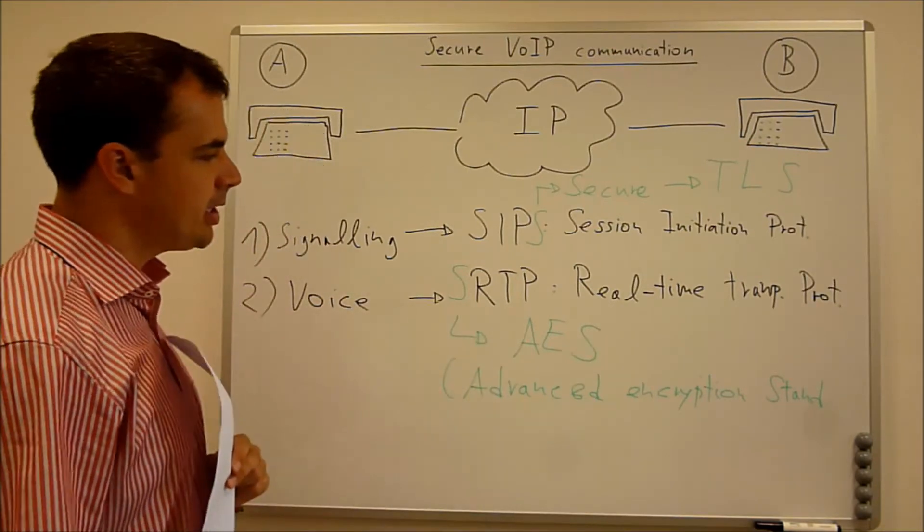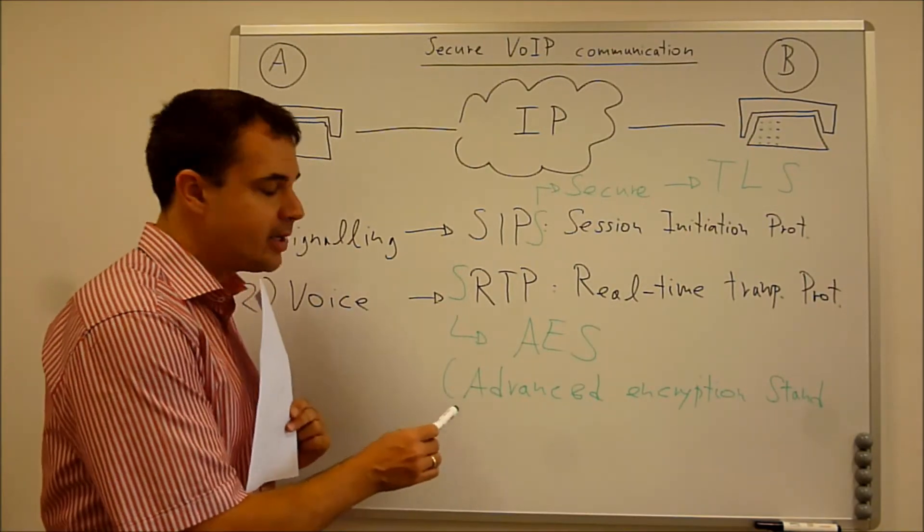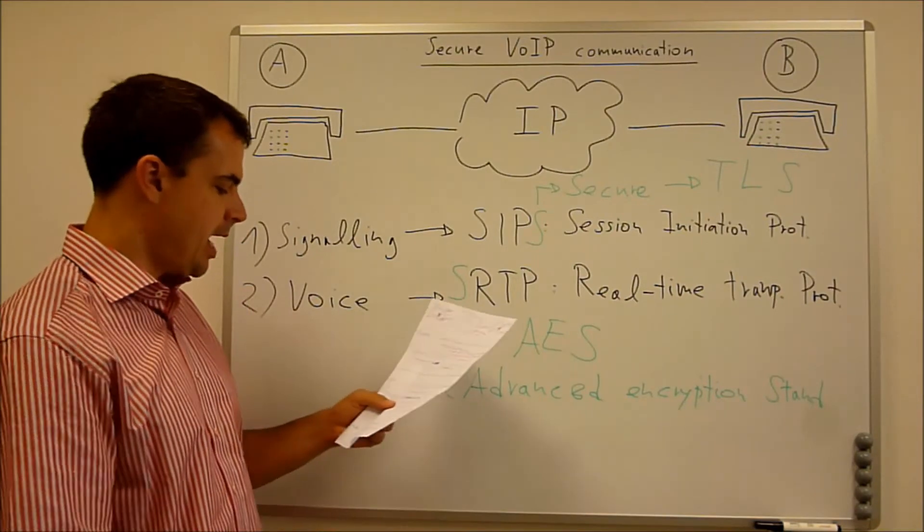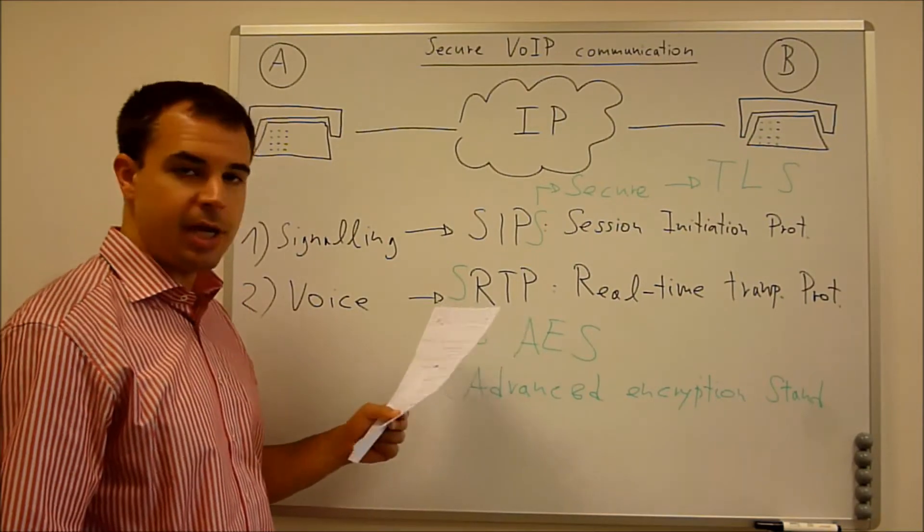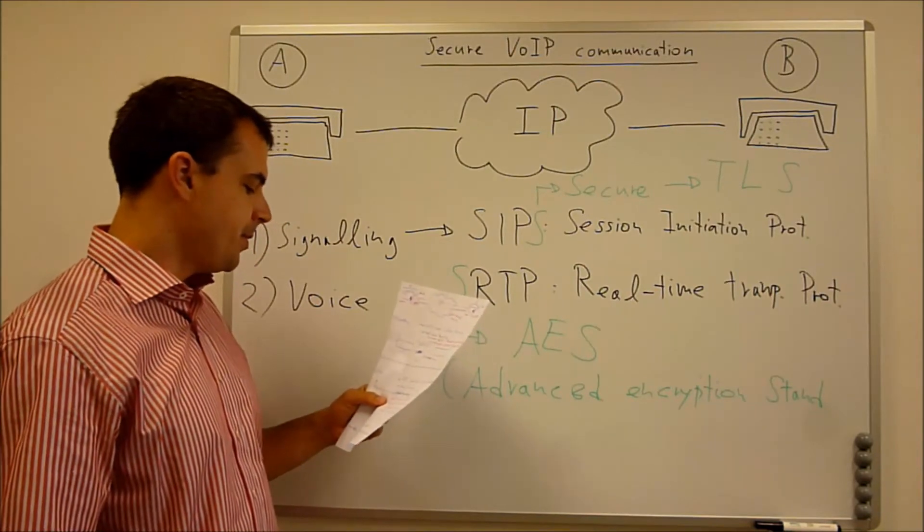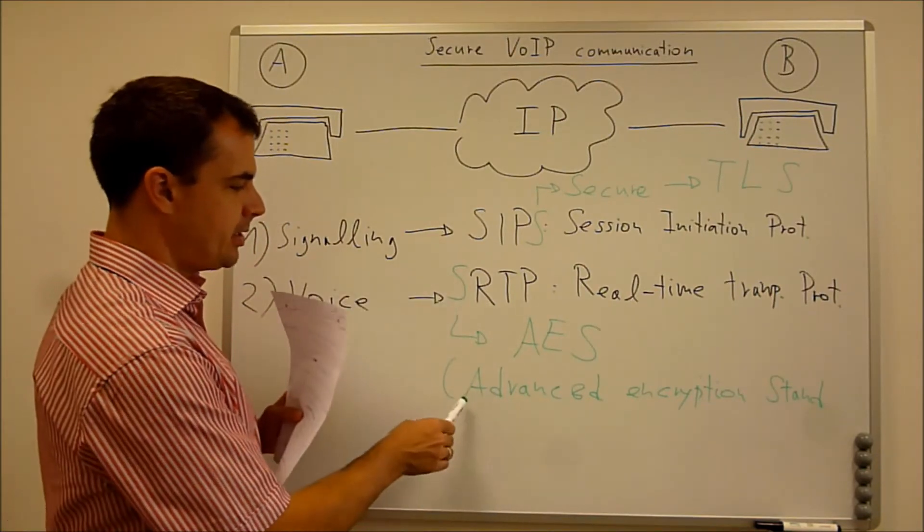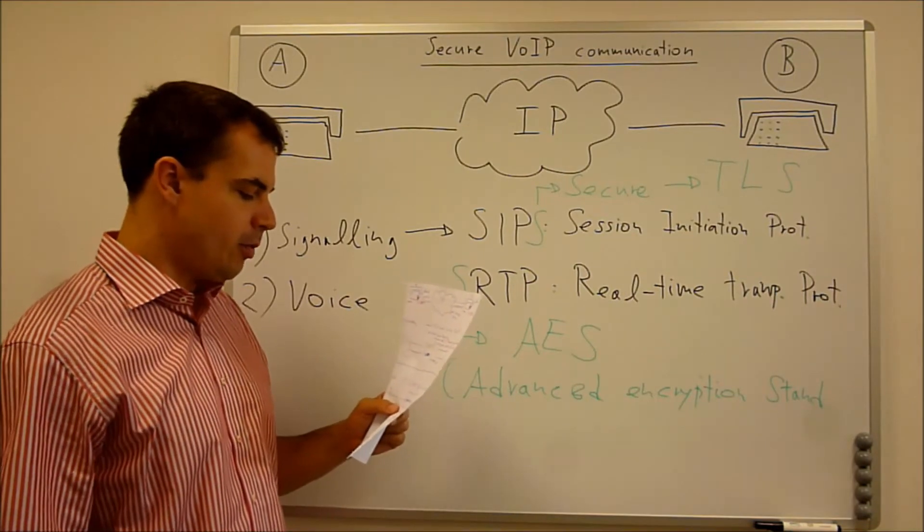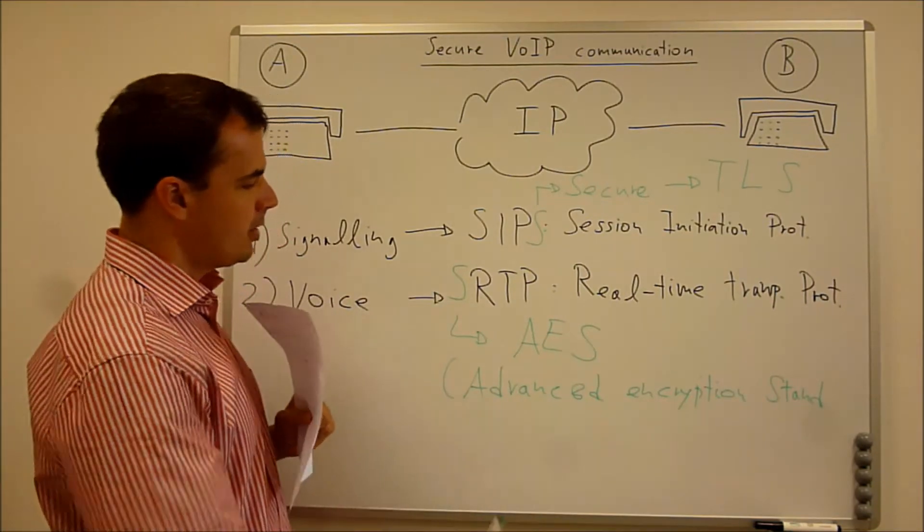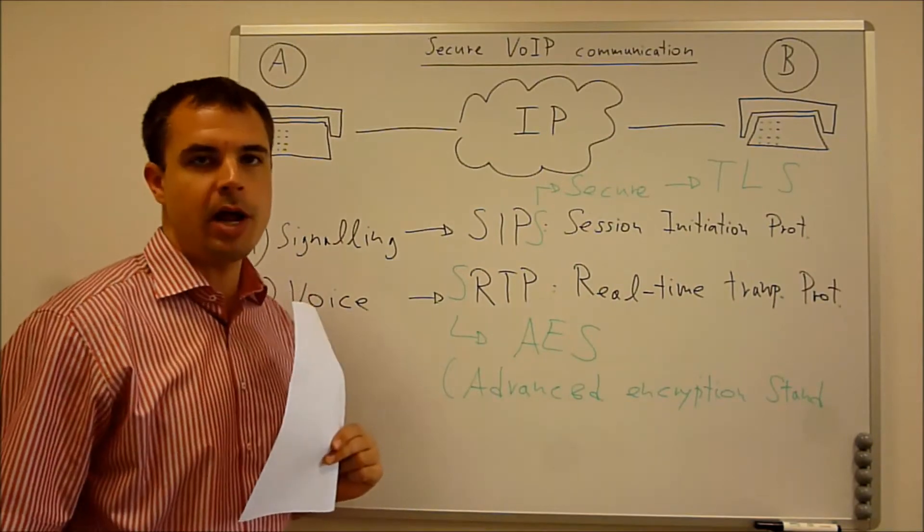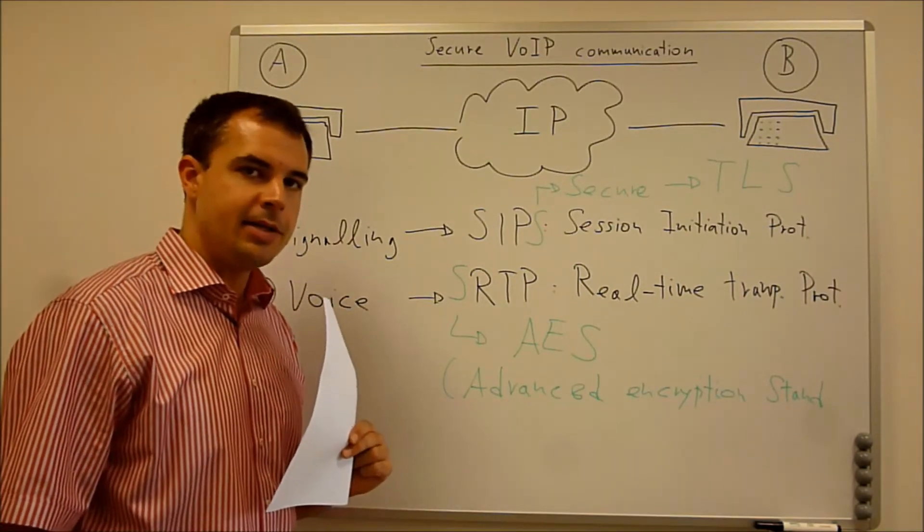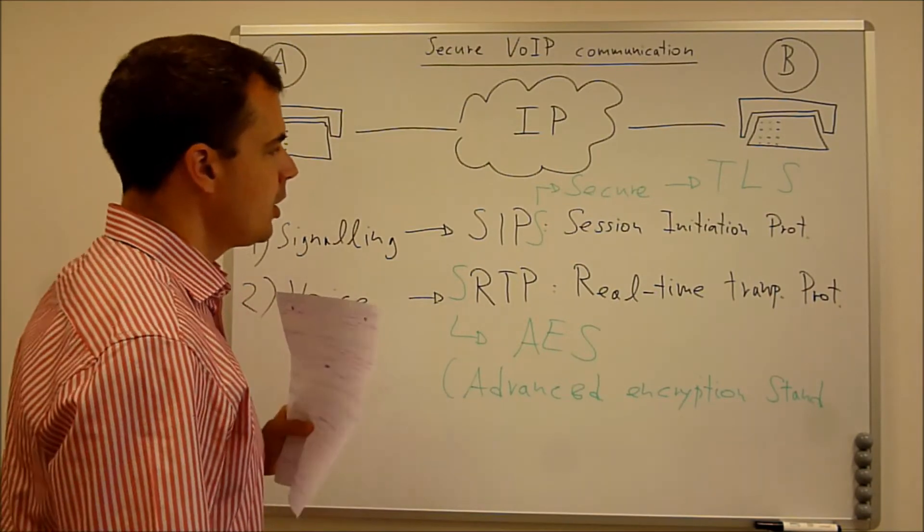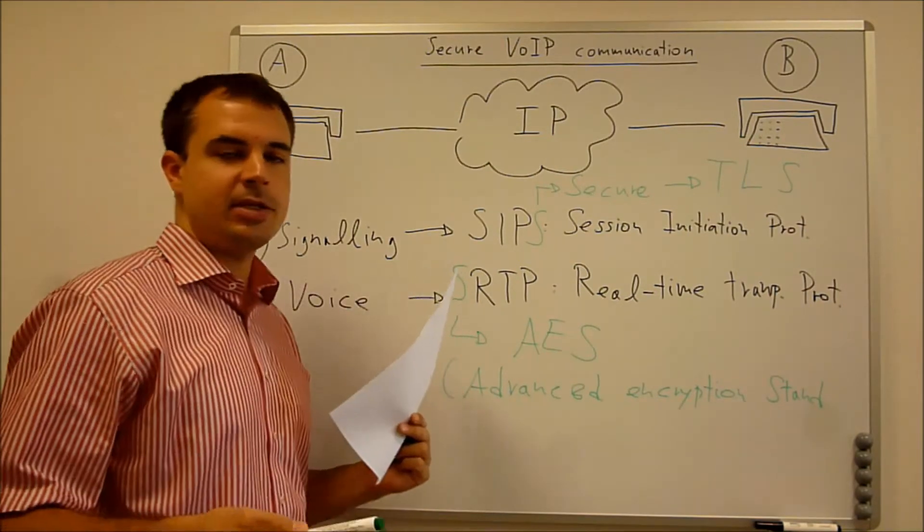And interestingly, interesting enough is that, for example, Wikipedia states that even the NSA, so the National Security Agency in the US, they have approved this Advanced Encryption Standard to be used for top secret information.